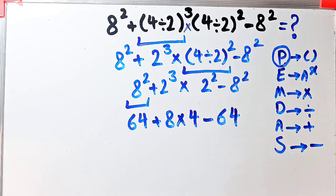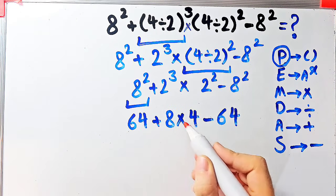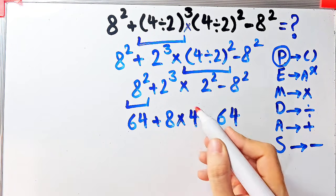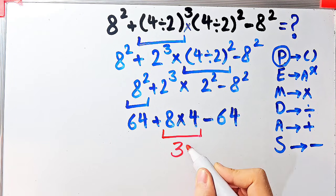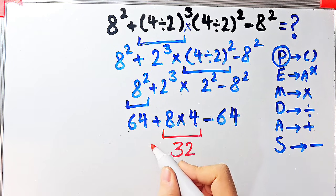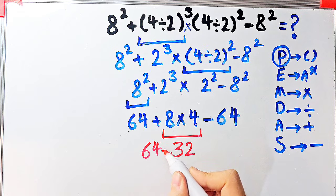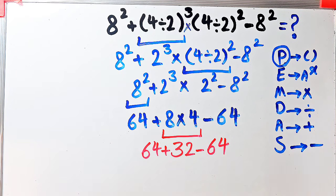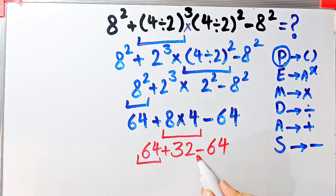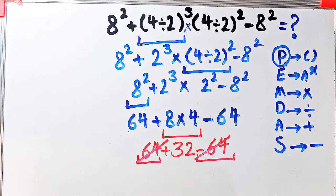In this step we have addition, multiplication, and subtraction. First we do the multiplication: eight times four equals thirty-two. Now we have sixty-four plus thirty-two, then minus sixty-four. Because we have negative and positive numbers on both sides, we simplify and get the final answer. The final answer of this question equals thirty-two.